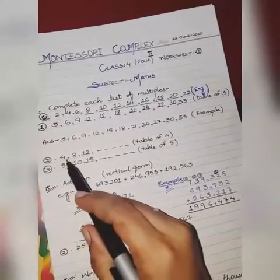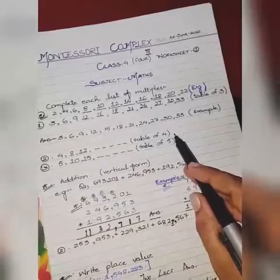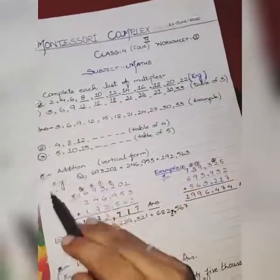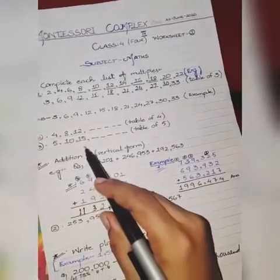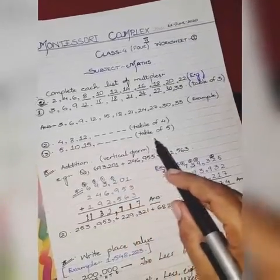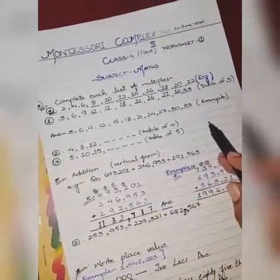Next part is 4, 8, and 12. You have to complete it - table of 4. Next part is 5, 10, 15. You have to complete it with the table of 5.